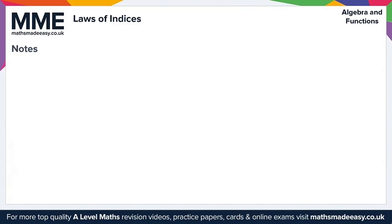To finish with some closing notes on the laws of indices: if you take any number or expression a and raise it to the power of 1, you simply get a itself. Also, 1 raised to the power of anything — whether positive, negative, or fractional — will always give us 1. That concludes this Math Made Easy video on the laws of indices.